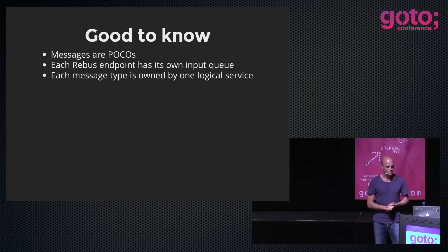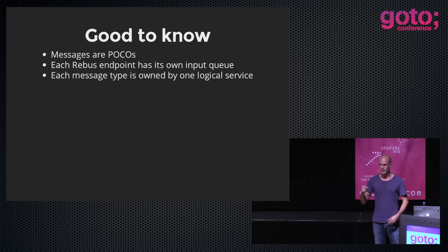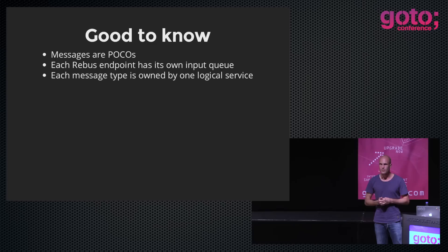In Rebus, all endpoints have their own input queue. The input queue of a Rebus endpoint is sort of the ID of the endpoint. Each message type is owned by one logical service, meaning for each message type in all your systems, you can always map that message type to one endpoint, and that endpoint will be the owner of that message.